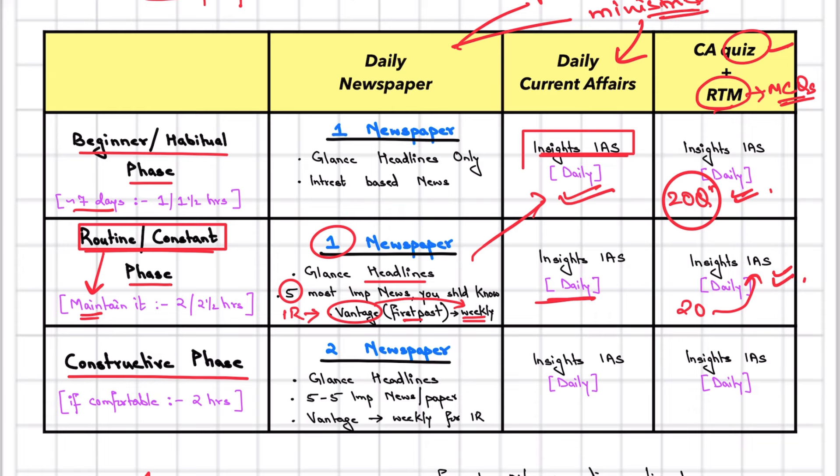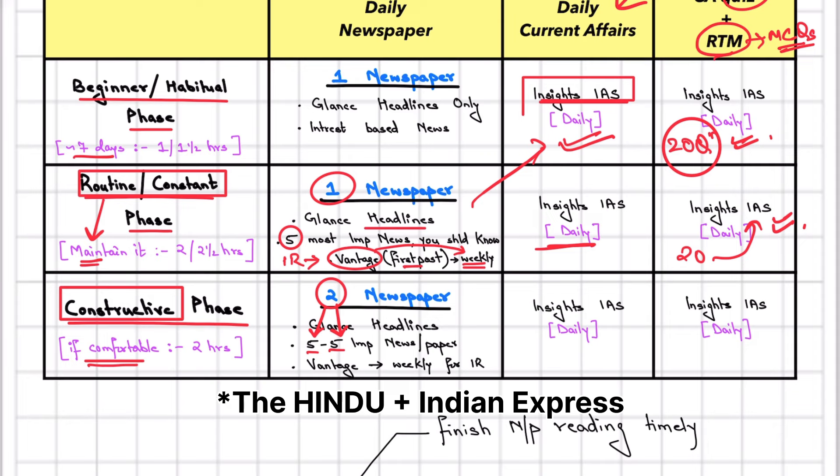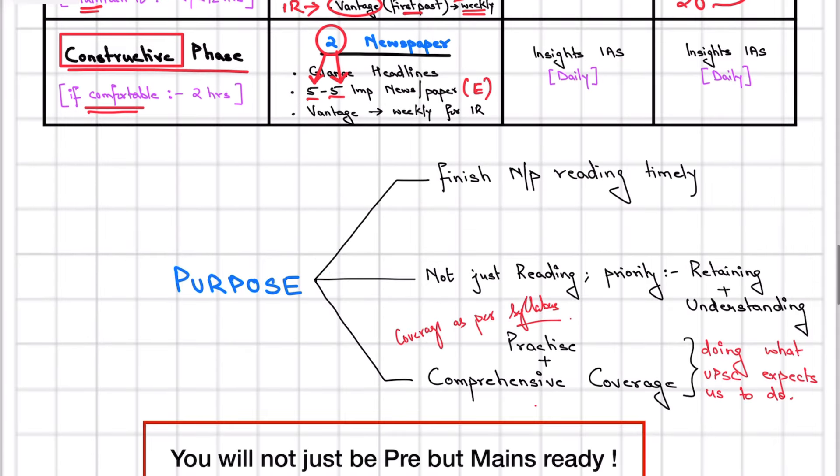Now when you're very comfortable, then what do you have to do? Some people may find the second phase easy and want to go further. They can go for the constructive phase. What you can do is everything will be the same, but you can target two newspapers instead of one. And you can read the five most important news items from both newspapers, including editorials. The purpose of this technique is to make your newspaper reading manageable.